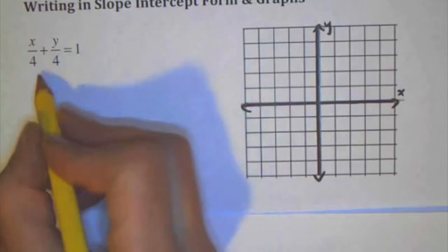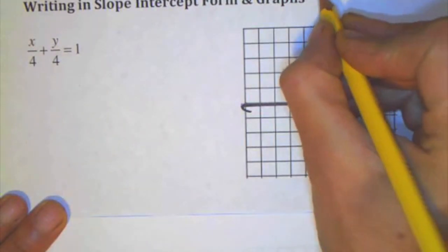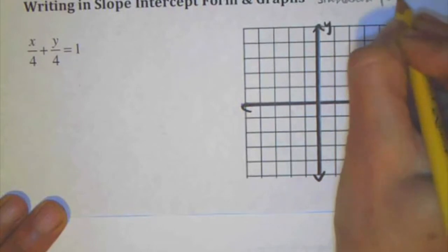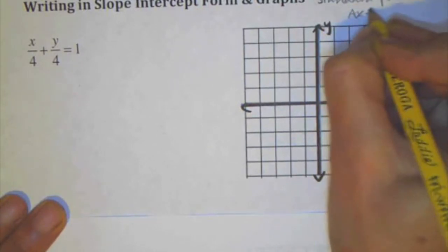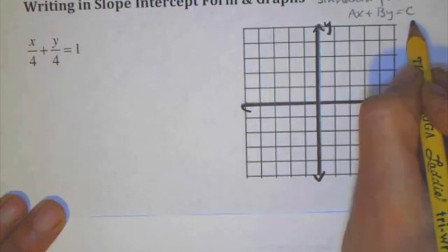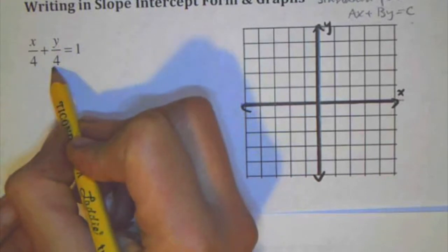So this one here looks a little bit like standard form because the x and y are on the same side. If you remember, standard form is Ax plus By equals C, where A, B, and C are integers and A is a positive integer. So these aren't integers, these are obviously rational numbers, fractions.